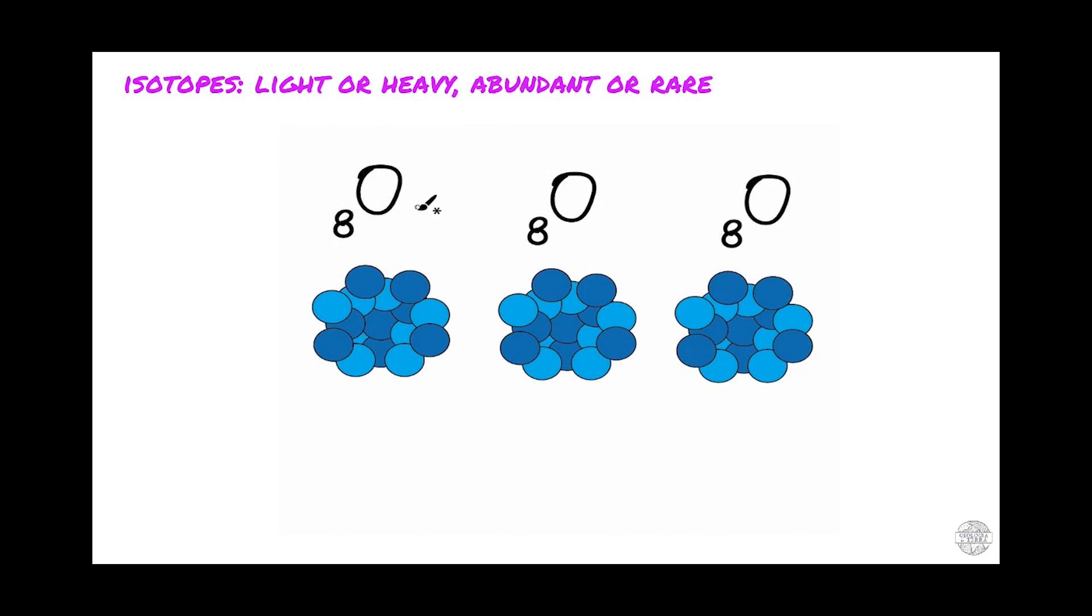Most oxygen nuclides have 16 atomic units. To be more precise, 99.795% of all oxygen in the world is like this. However, 0.204% of the remaining oxygen has 10 neutrons instead, giving it a mass of 18 atomic units.